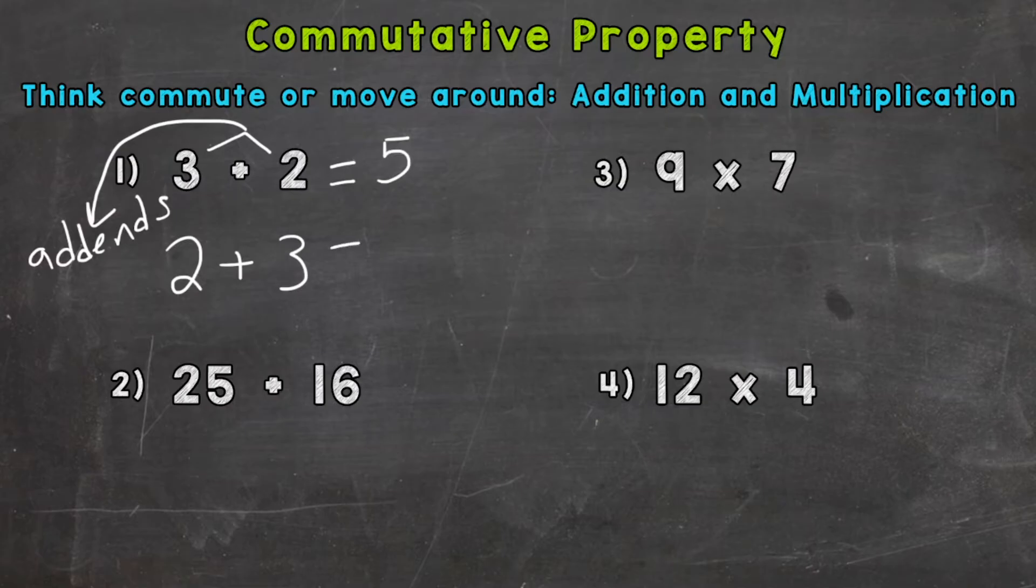Does that still give us 5? Yes! So addition is commutative. You can move around or commute those addends and still get the same sum or answer.